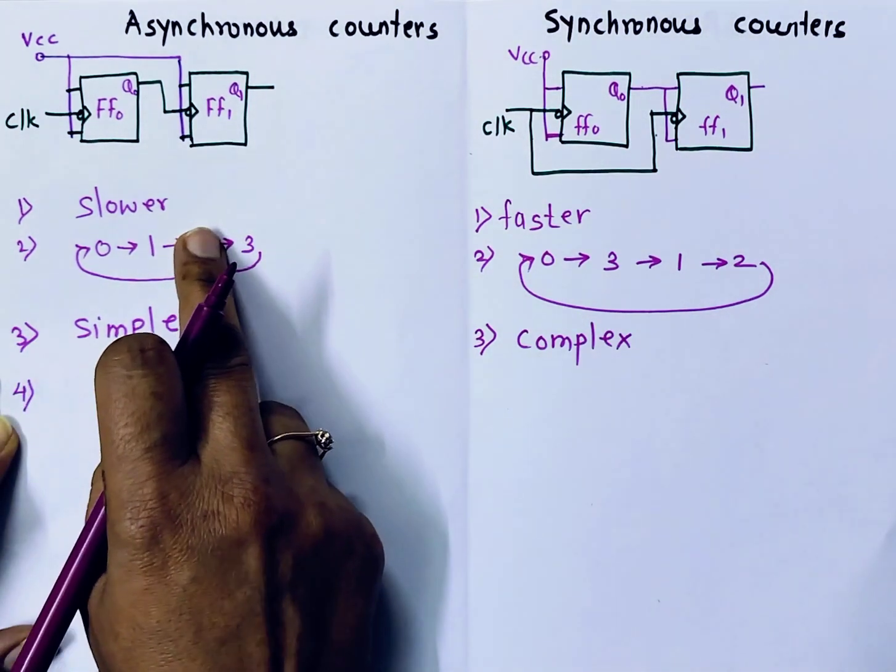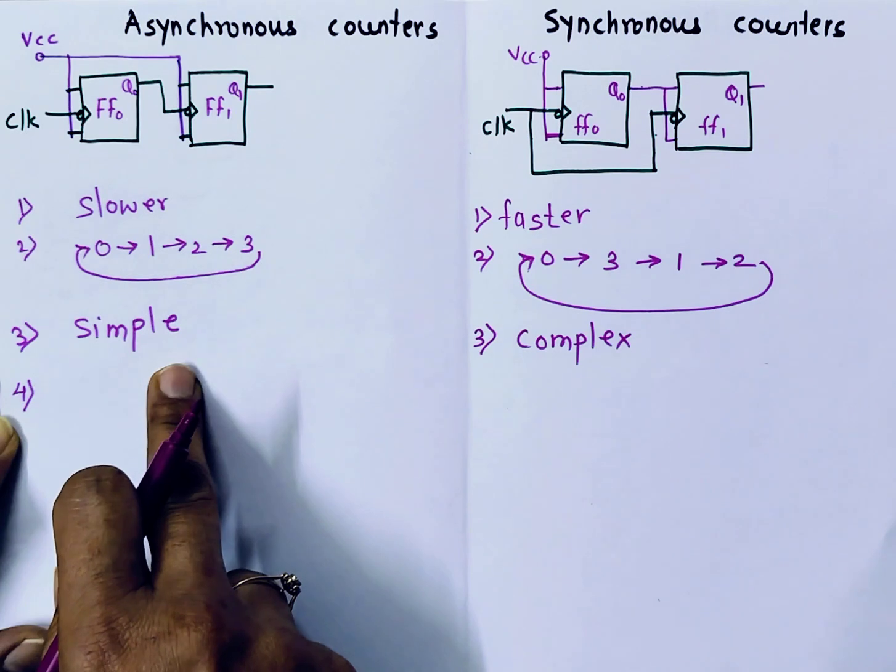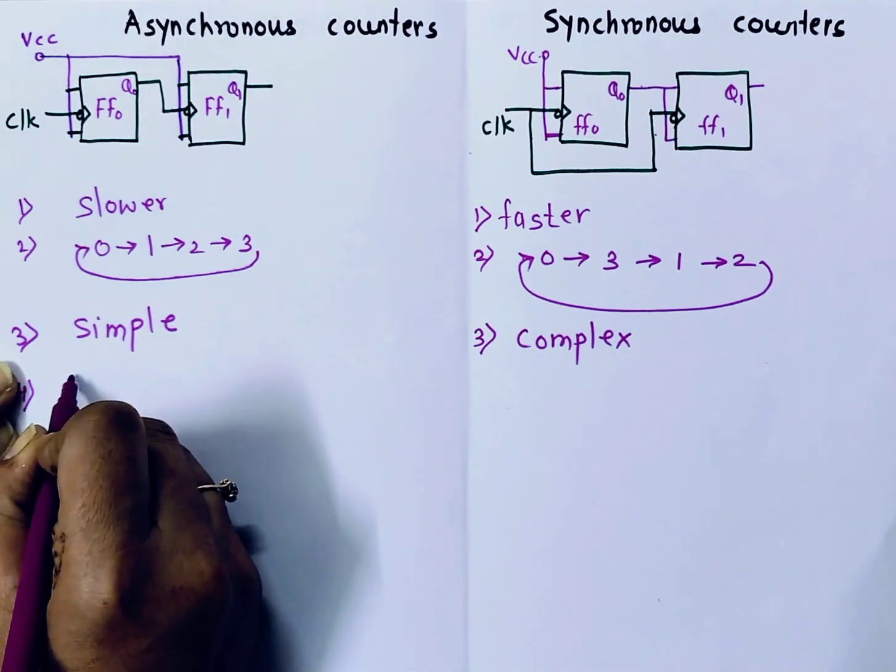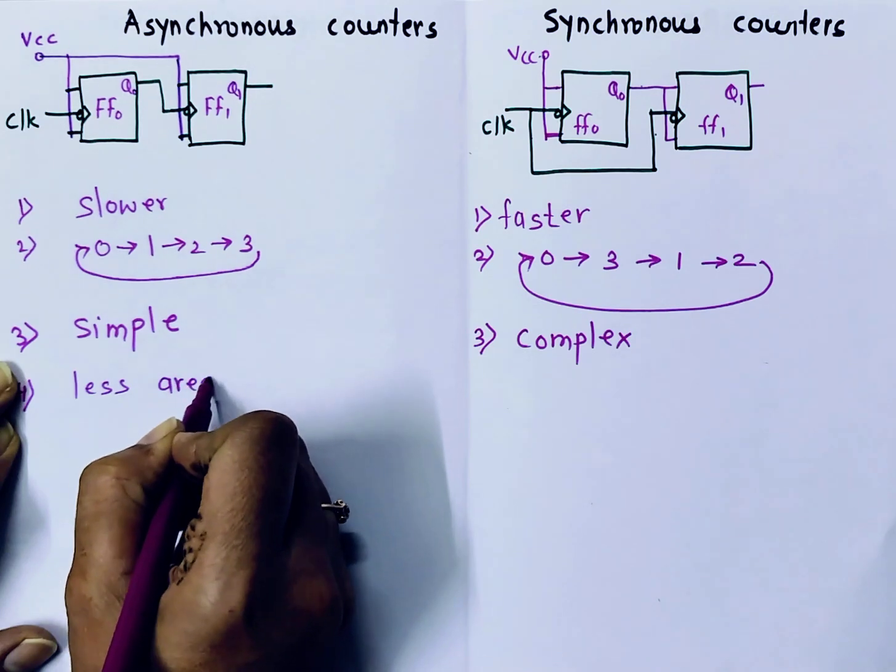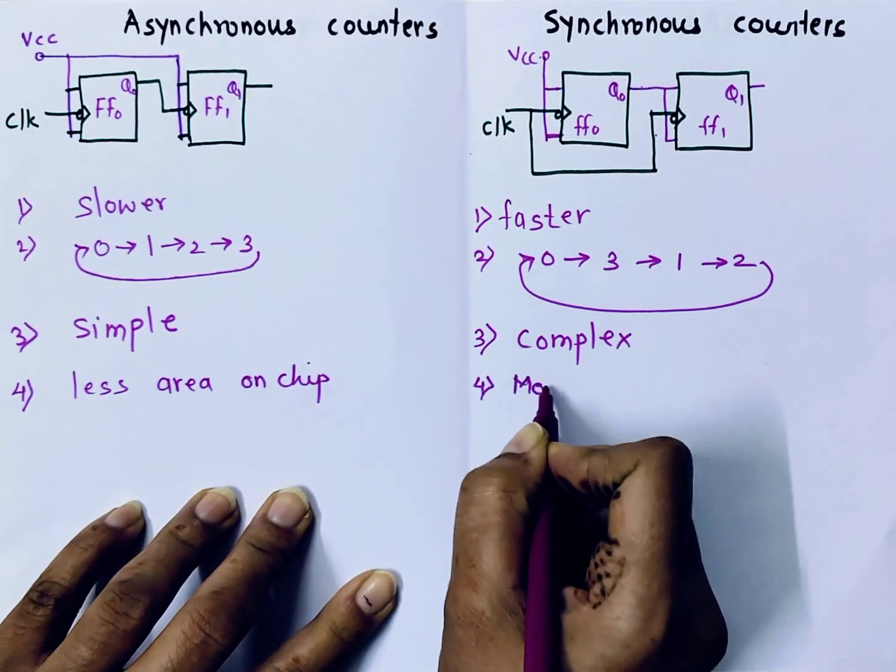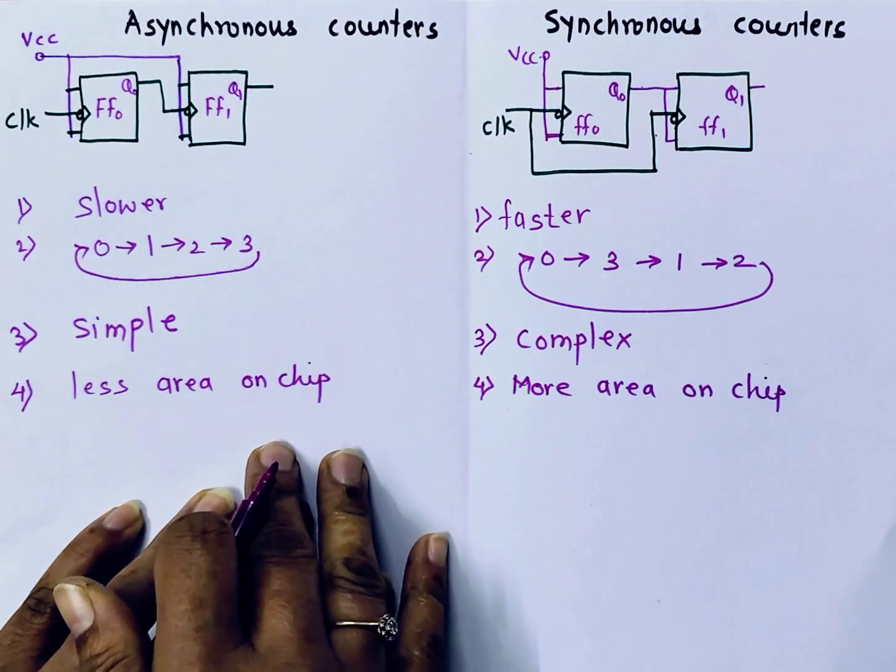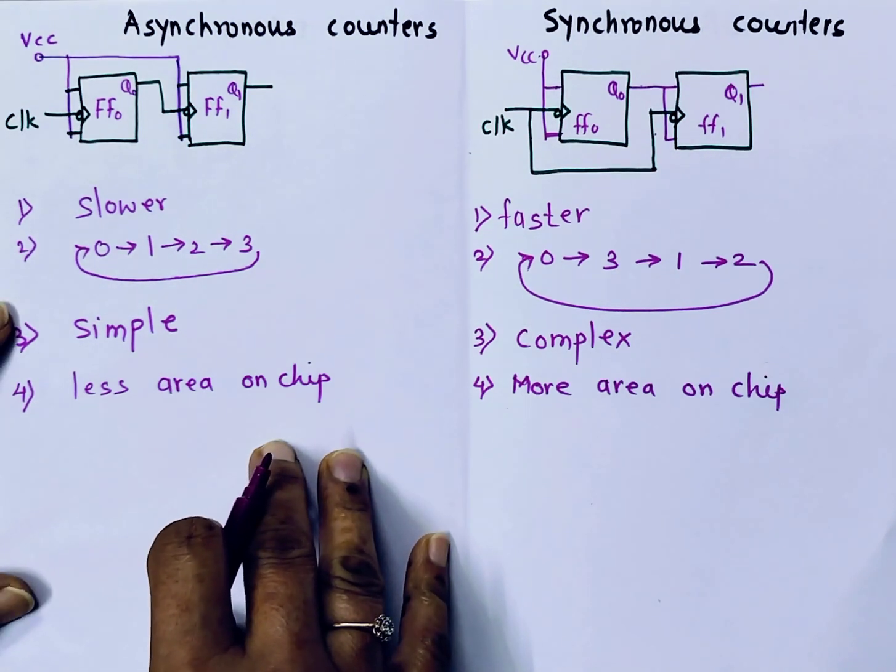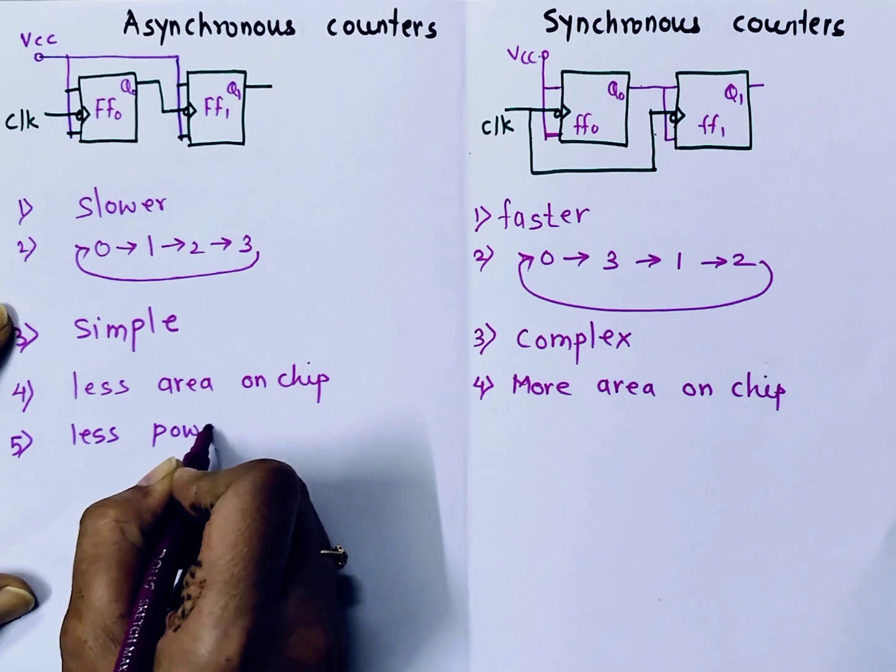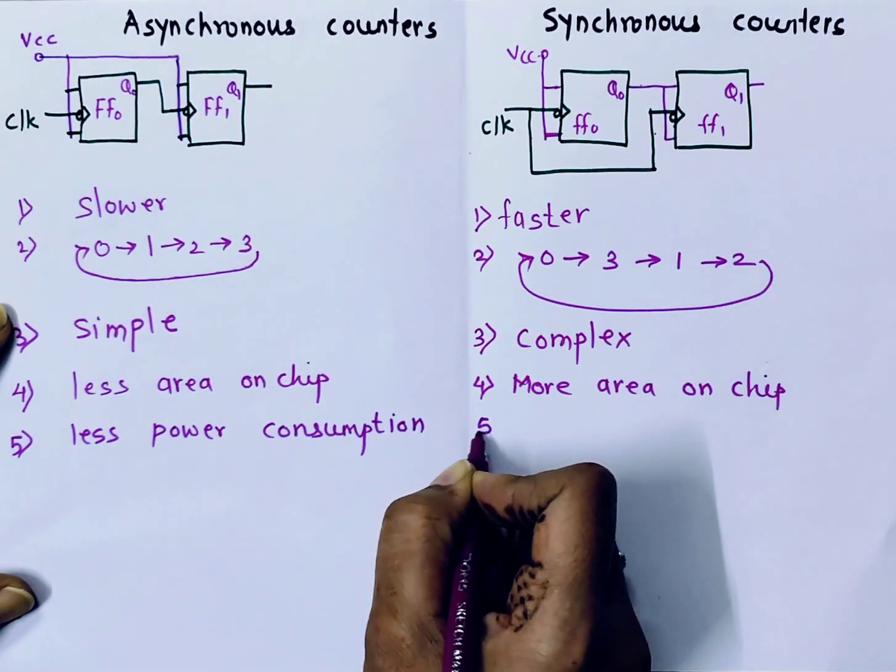Then, the speed is less here, speed is more here. They are simple, they are complex. So they consume less area on chip and they consume more area on chip. Less area on chip, more area on chip. Because they are simple, they consume less power as compared to Synchronous counters. Less power consumption. Here, power consumption is more.